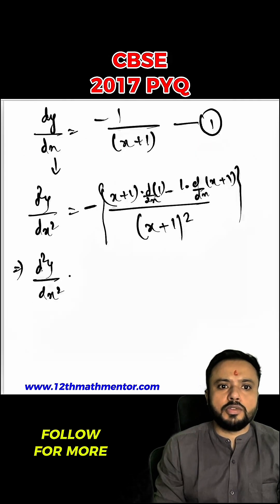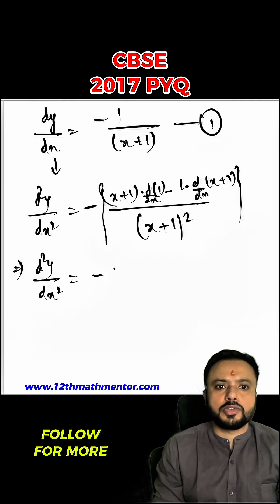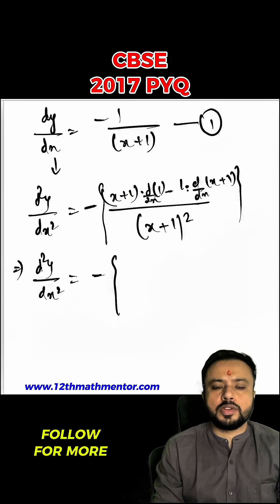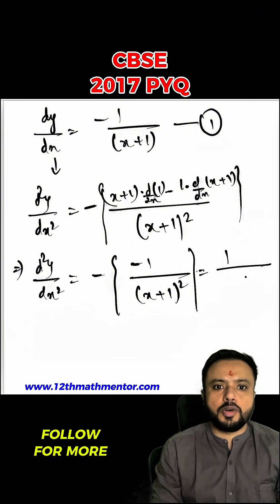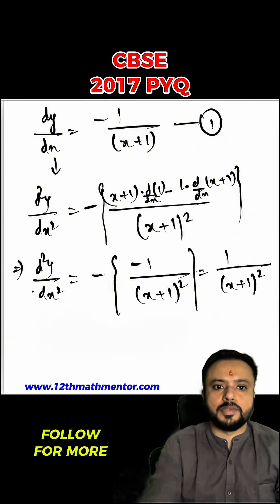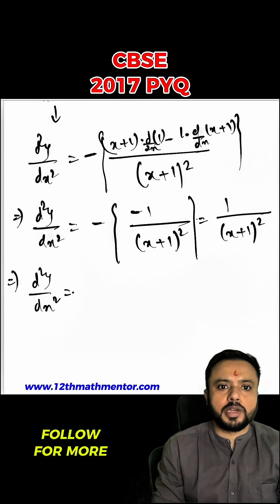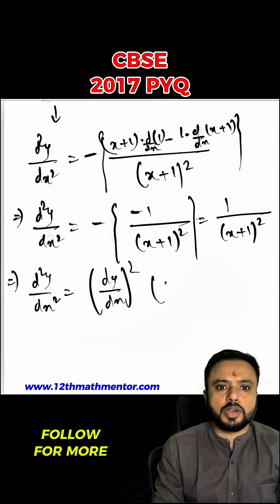Simplifying the RHS: the differentiation of 1 is 0, so those terms vanish, leaving negative 1 in the numerator. This gives d²y upon dx² equals negative 1 upon (x plus 1) whole square, which becomes positive 1 upon (x plus 1) whole square after the two negatives cancel. Hence, d²y upon dx² equals (dy/dx) squared, as required from the first equation.